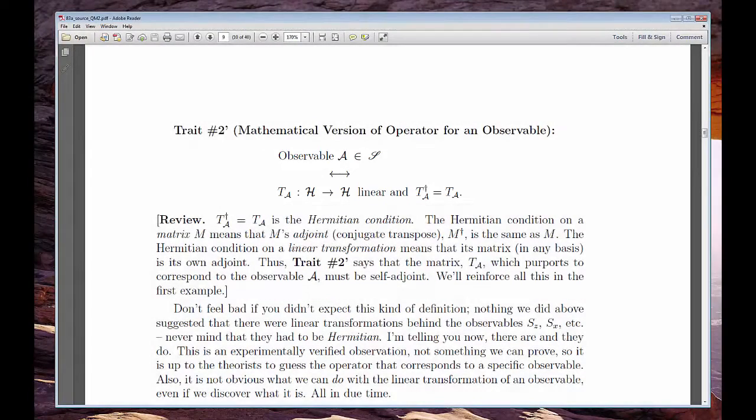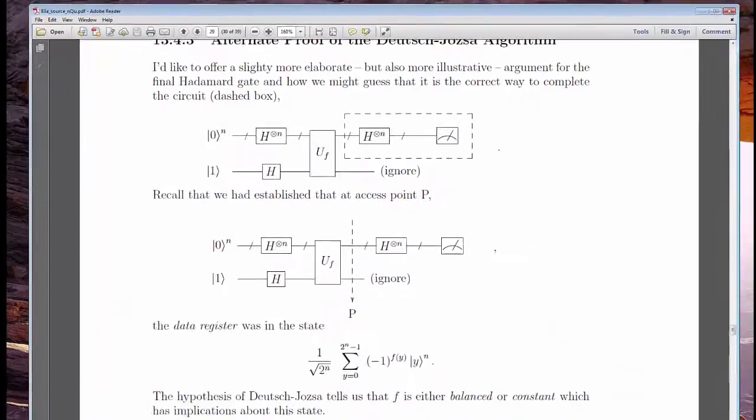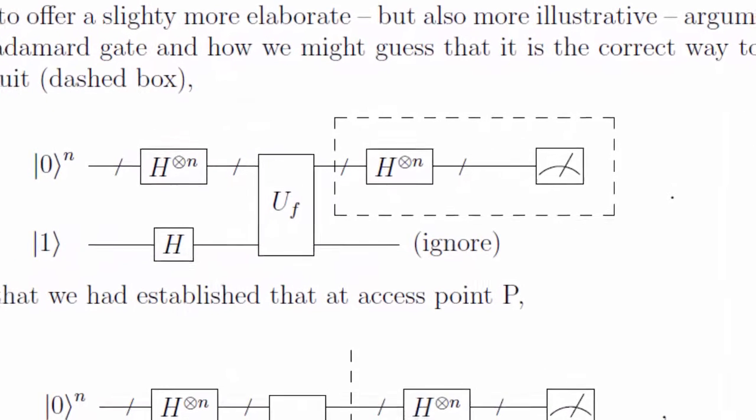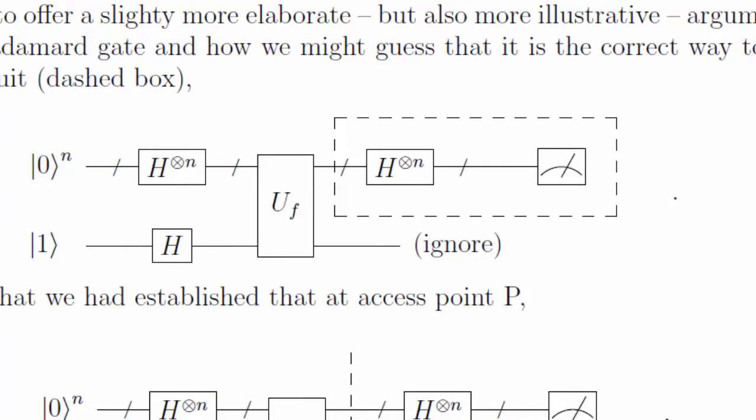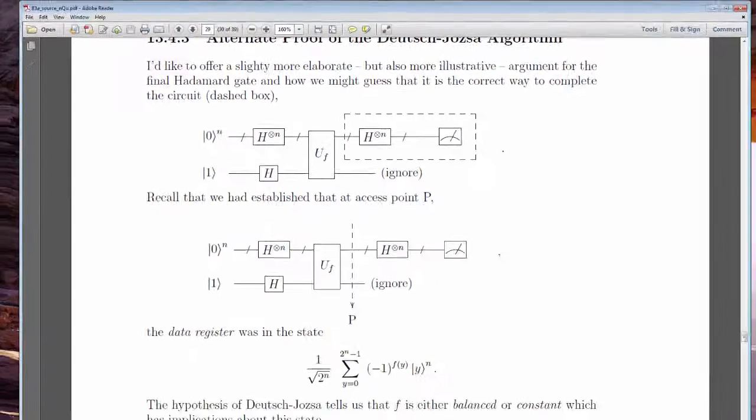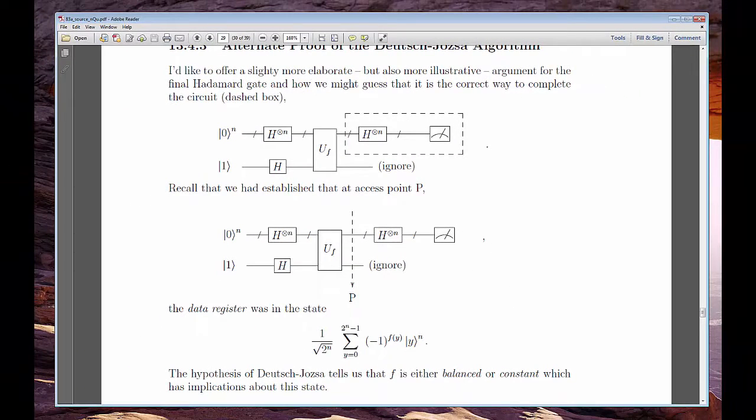Minor note to help you avoid future embarrassment at a party: taking a measurement does not involve applying the observable's corresponding operator to a state. Taking a measurement is an irreversible, non-unitary operation. The Hermitian operator associated with the observable is used in a different way that you'll learn about later today.